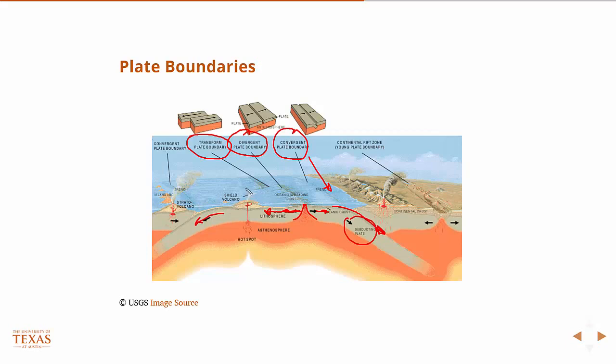So kind of in the interior, you have these transform plates, and these are basically areas of shear and lots of cracking. Large fractures. And most of these occur in oceans, but we have a very important one on our western coast that everyone knows, which is San Andreas Fault, is of this type, a transform plate boundary.